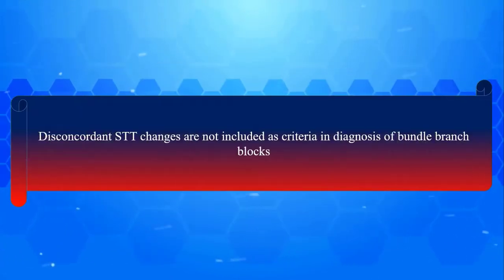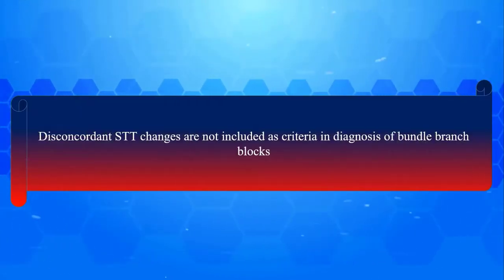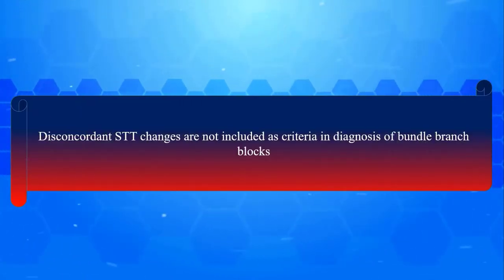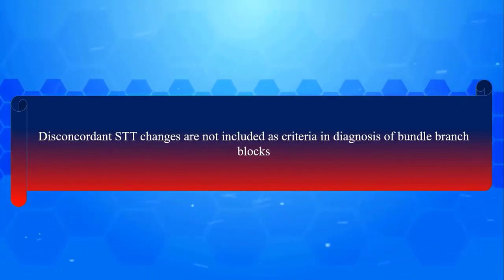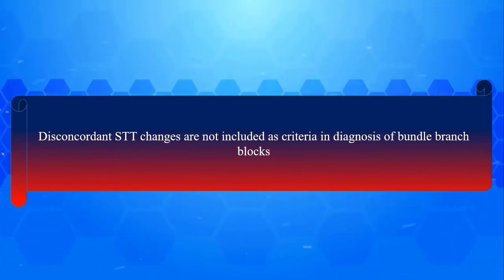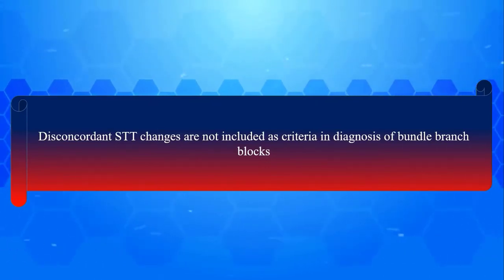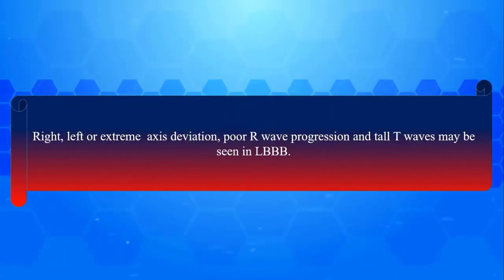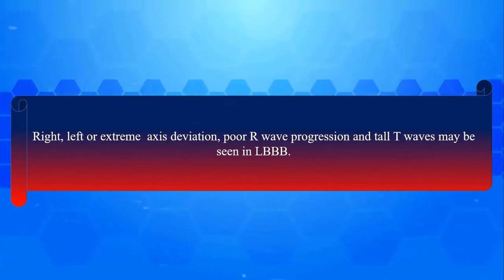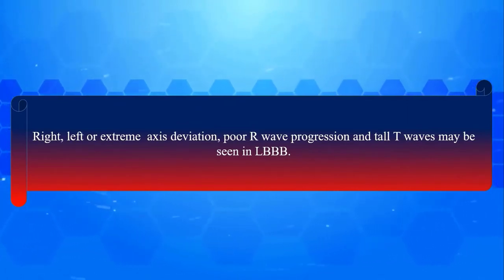Note that discordant STT changes are not included as criteria in the diagnosis of bundle branch blocks, so they can be present or absent in LBBB. Other associated features in LBBB are right, left, or even extreme axis deviation, poor R wave progression, and tall T waves.